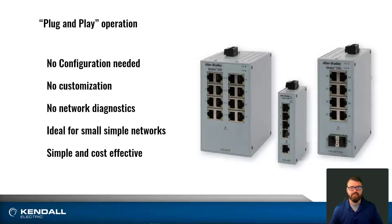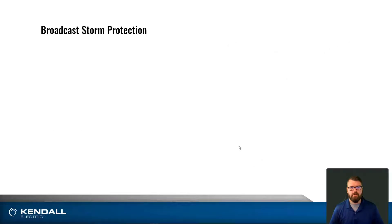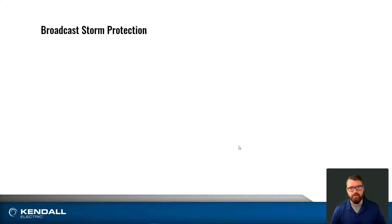Next, let's talk about broadcast storm protection. Broadcast storms can happen in unmanaged switches. There are three main types of network traffic that we deal with on our industrial networks: unicast, broadcast, and multicast.